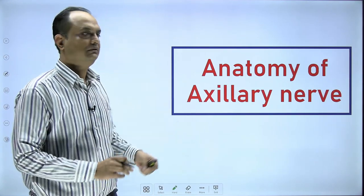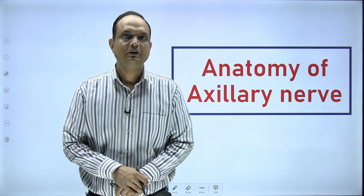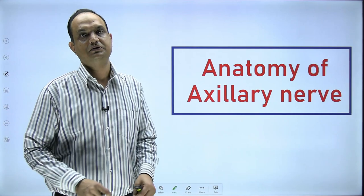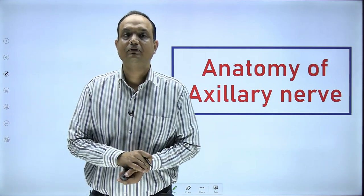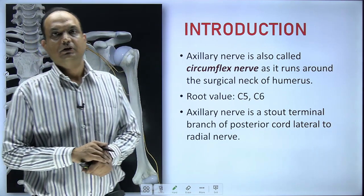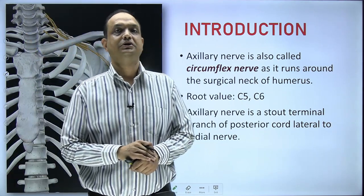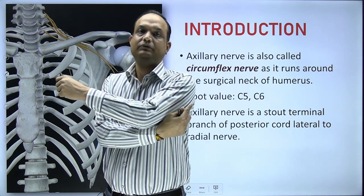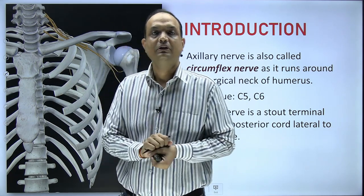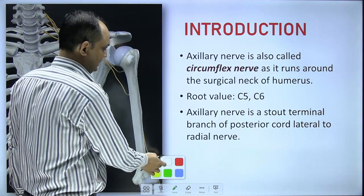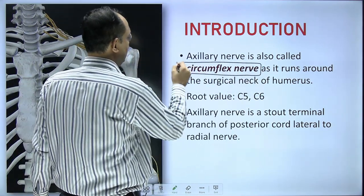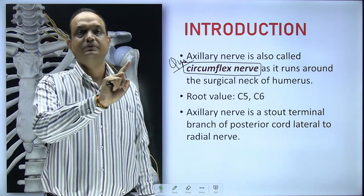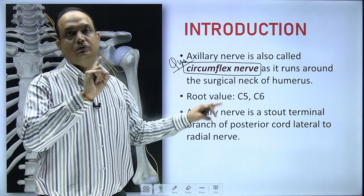Hello students, today we will discuss the anatomy of the axillary nerve. This is an important short note for your exam, and there are a few related clinical anatomy questions based on the axillary nerve that we will discuss at the end of this session. The axillary nerve is related to the surgical neck of the humerus. On dissection of the posterior side, it follows a winding course around the surgical neck, which is why it is also known as the circumflex nerve.